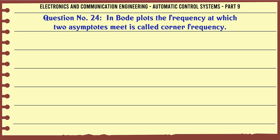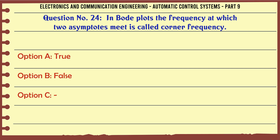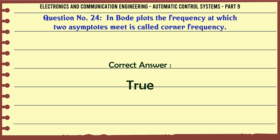In Bode plots, the frequency at which two asymptotes meet is called corner frequency. A. True, B. False. The correct answer is: True.